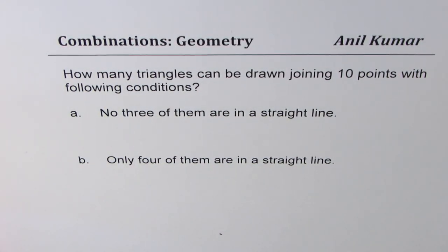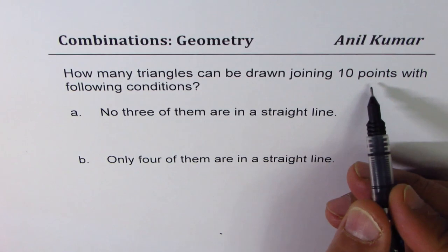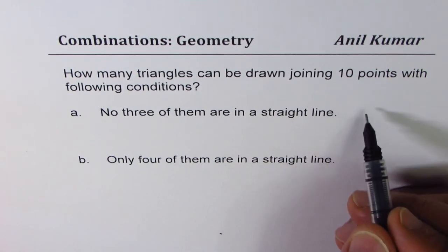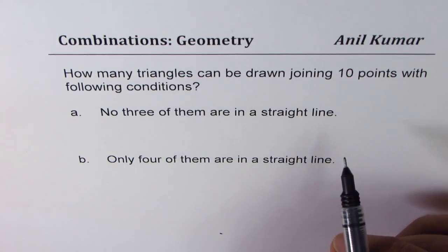I'm Anil Kumar and in this video we'll further explore the application of combinations when applied to geometry. The question here is: how many triangles can be formed joining 10 points with the following conditions — A: no three of them are in a straight line, and B: only four of them are in a straight line. So if we have 10 points which are scattered but no three of them in a straight line, how many triangles can you form?